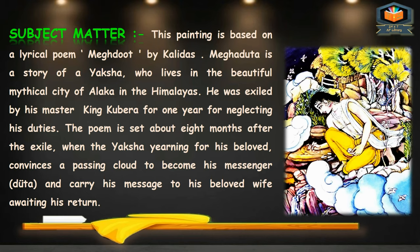The Yaksha, who lives in the beautiful mythical city of Alaka in the Himalayas, was exiled by his master King Kubera for one year for neglecting his duties. The poem is set about eight months after the exile. The Yaksha, yearning for his beloved, convinces a passing cloud to become his messenger and carry his message to his beloved wife awaiting his return.